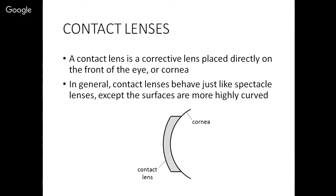So that's how a spectacle lens works. A spectacle lens is great but they have to be mounted on the nose in front of the eye. You can also place a lens directly in contact with the eye and that's called a contact lens. That's put right at the front of the eye or the cornea. Now, in general, contact lenses behave just like spectacle lenses except those surfaces are more highly curved. So that's really the only difference between a contact lens and a normal spectacle lens, the curvature of the surfaces.